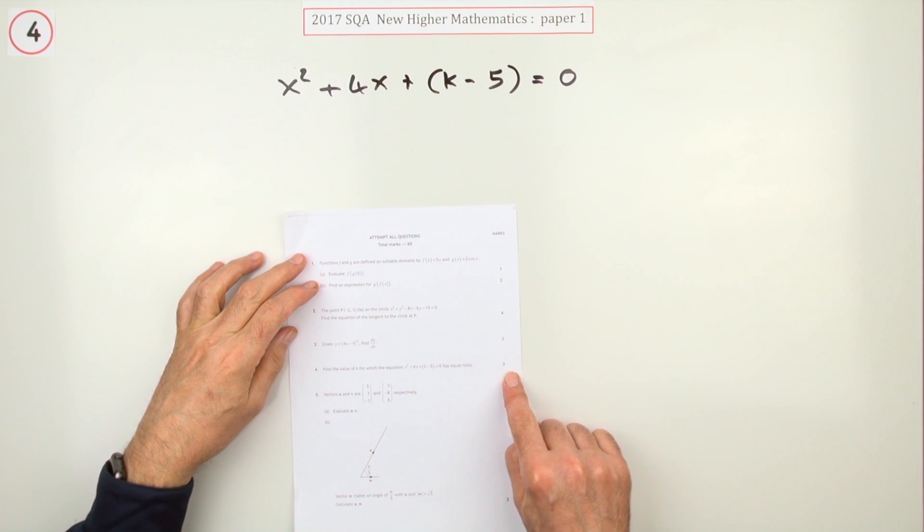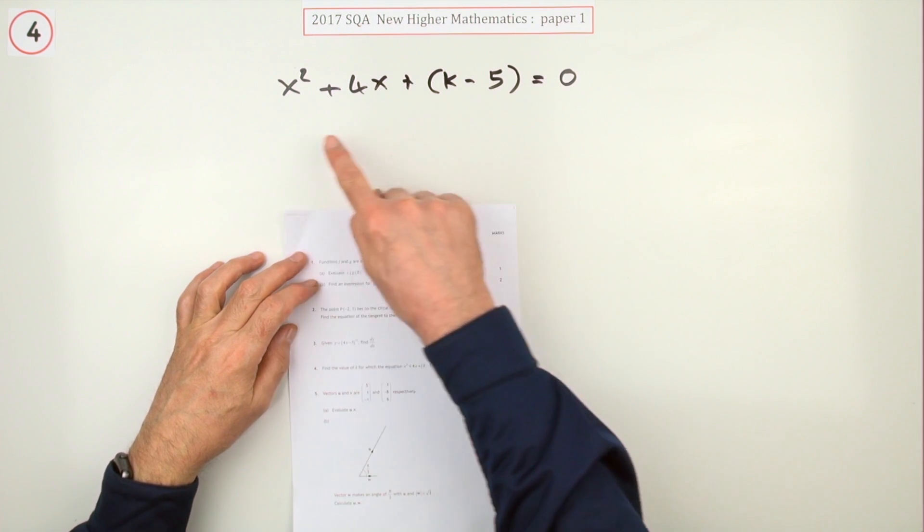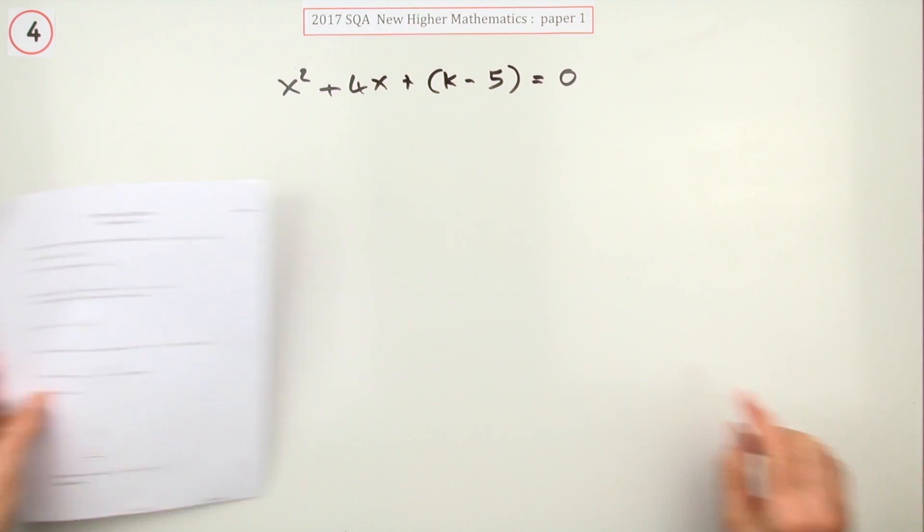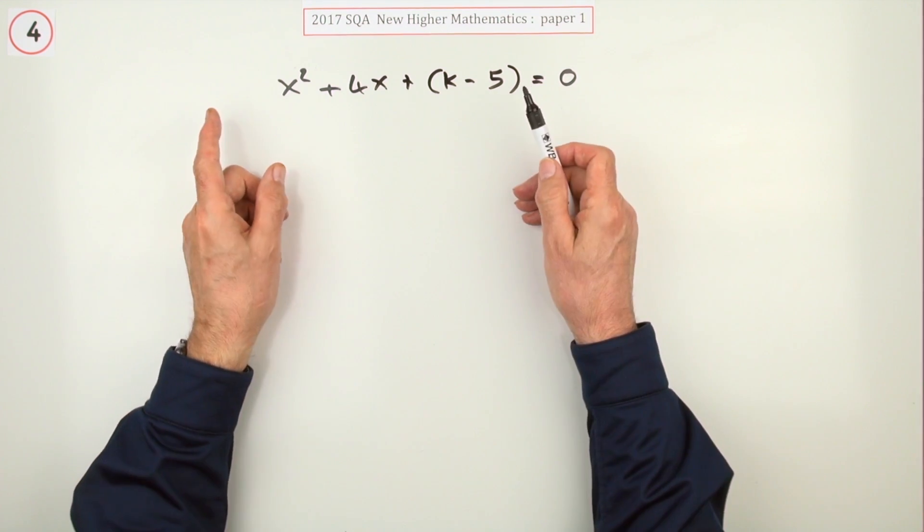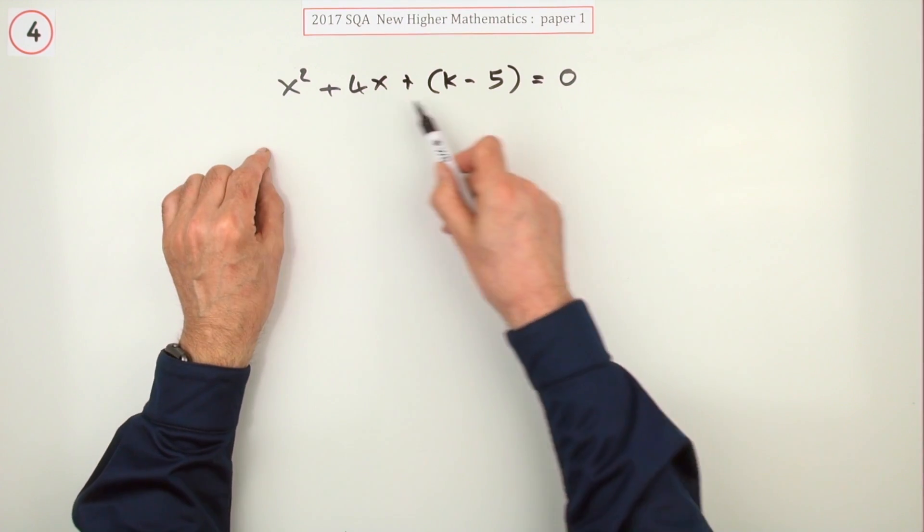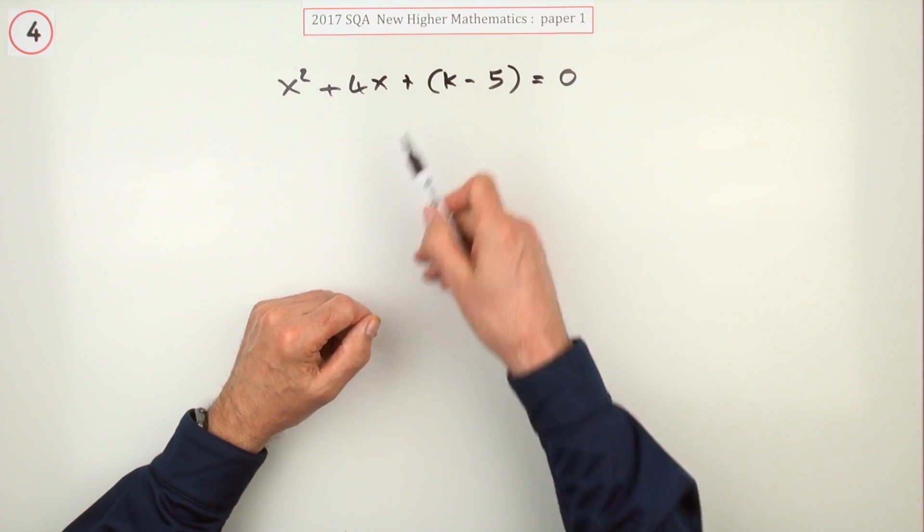Number four, for three marks: find the value of k for which this quadratic equation has equal roots. Well, equal roots means that it should factorize into a perfect square, so you know that should be a four at the end.